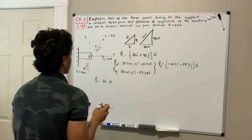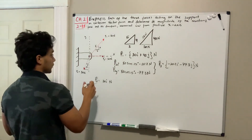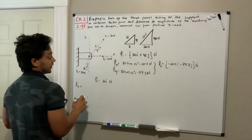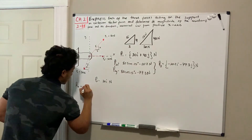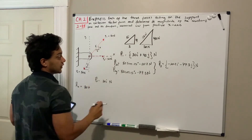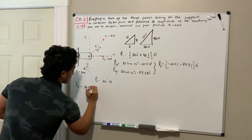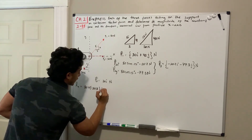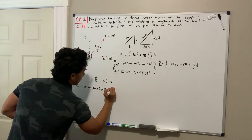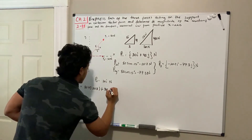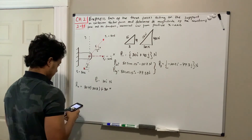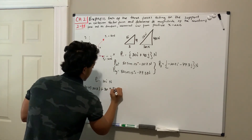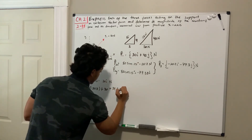To find the resultant force, we add all components. The resultant in the x direction, Rx, equals F1x plus F2x plus F3x, which is 30 plus negative 20.7 plus 30, giving us 39.3 Newtons, and it's positive so it's pointing to the right.